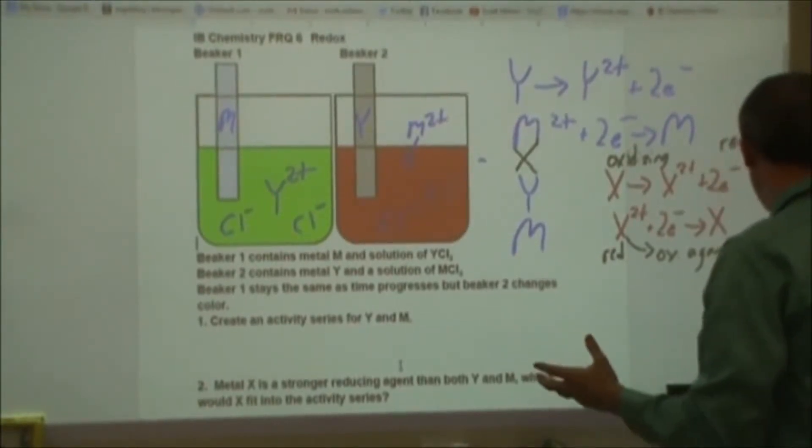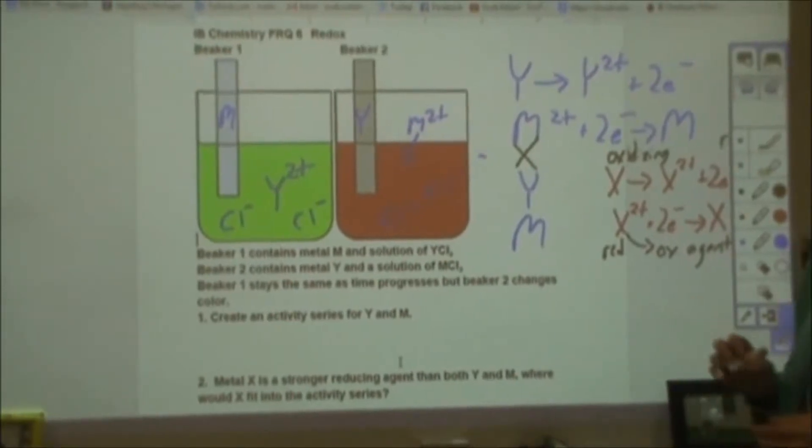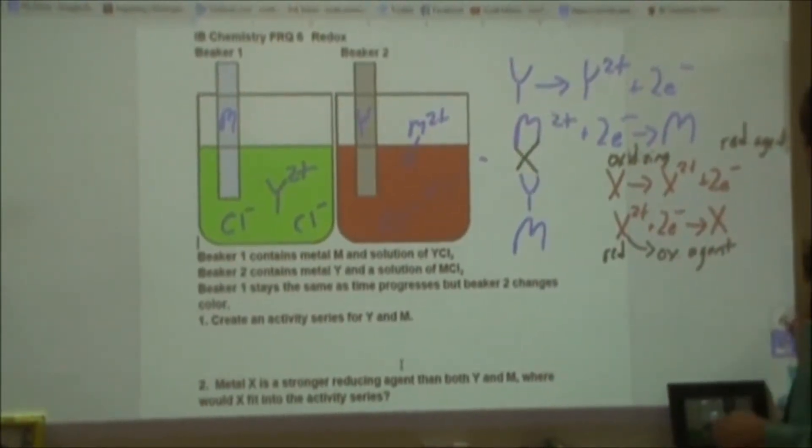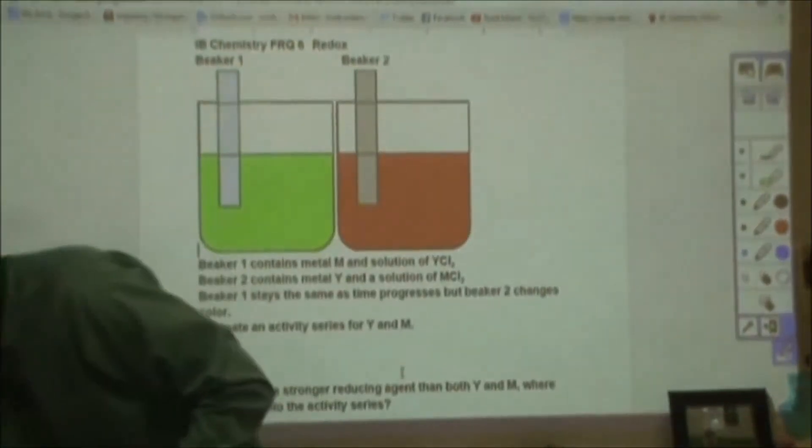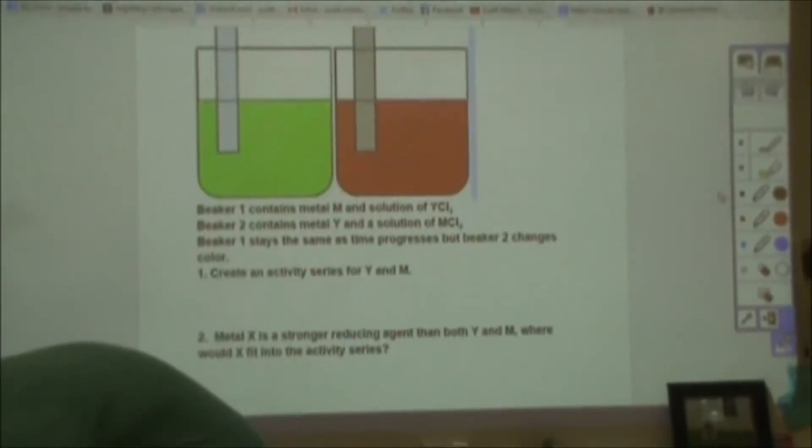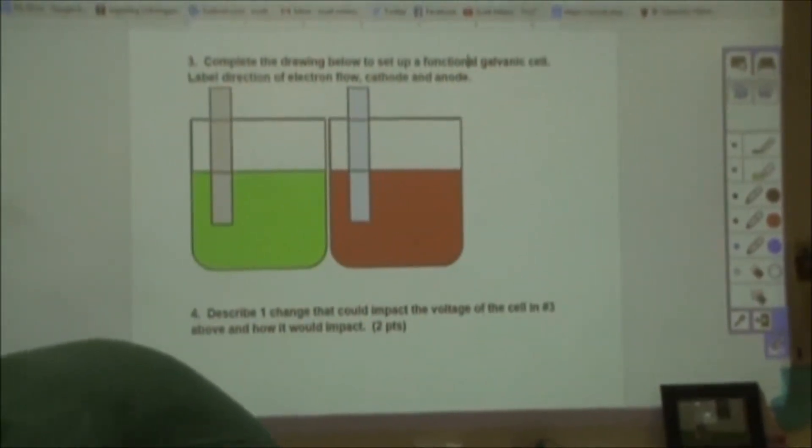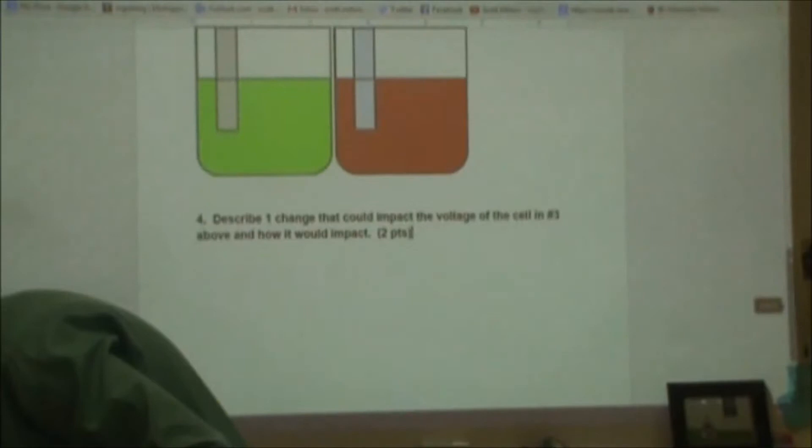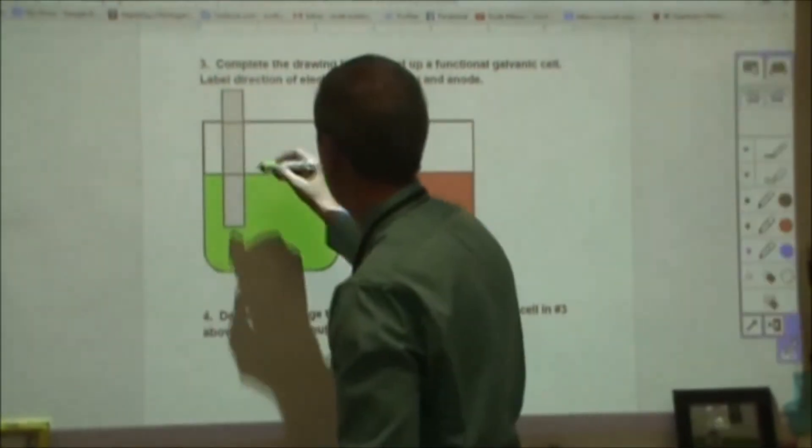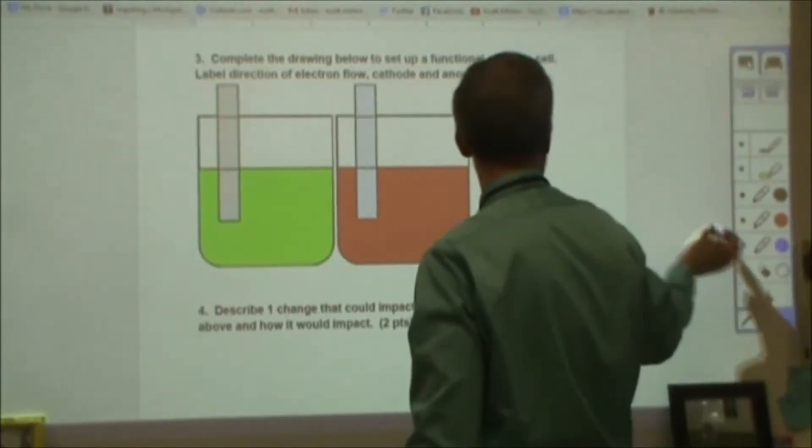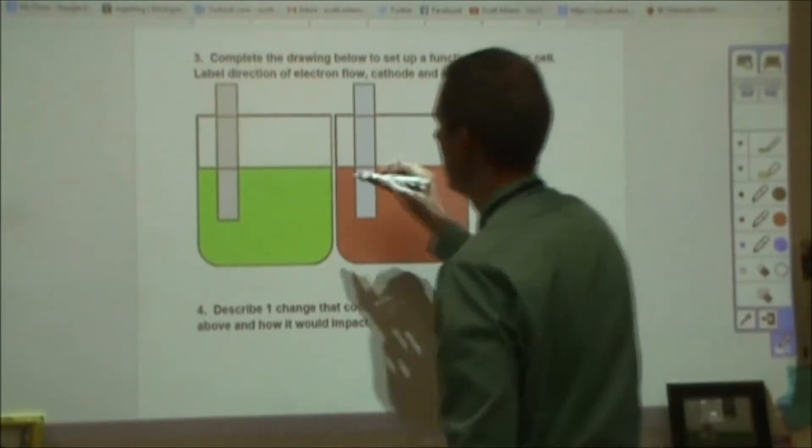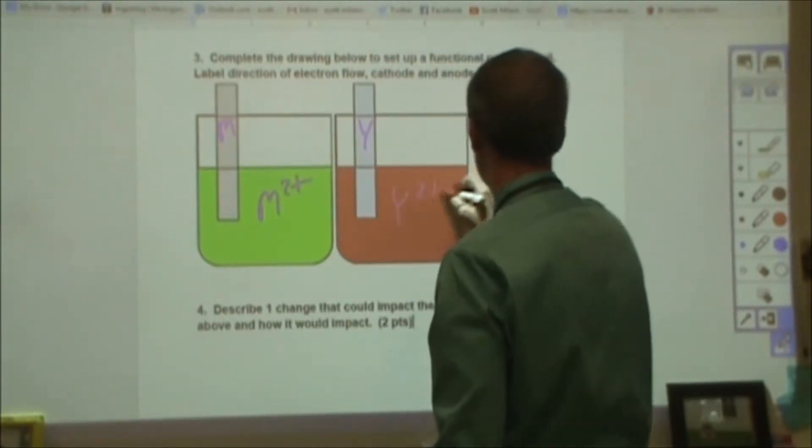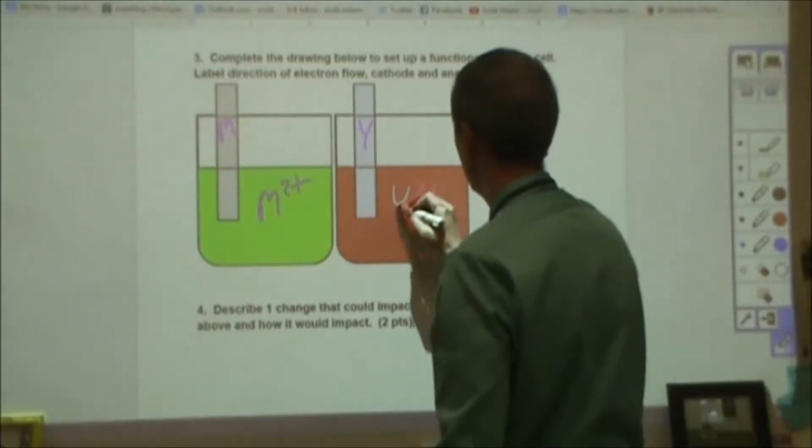Now from here, we're going to take these two beakers, we're going to rearrange slightly. What we're going to do is we're going to take Y, put it with Y2+, take M, put it with the M2+, we're going to construct a battery. So this is our metal M, let's get a color coding on this. This is our metal Y. This is our M2+ solution. And this is our Y2+ solution.